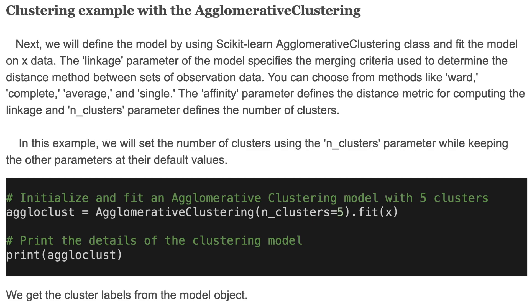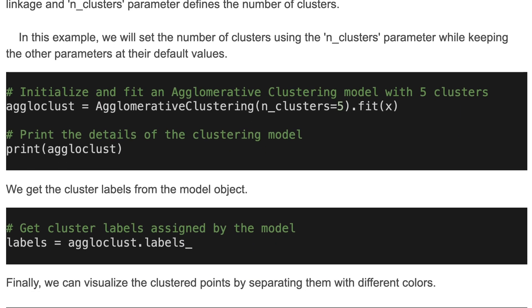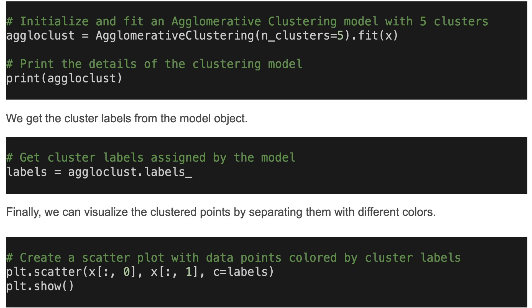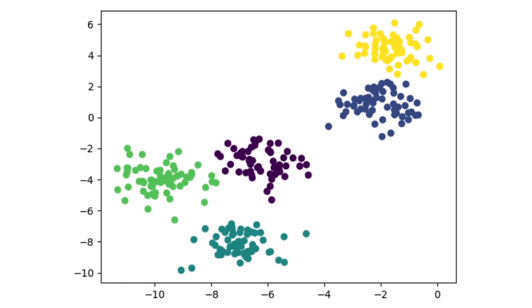We can print the details of the clustering model, then get the cluster labels from the model object. We extract the labels, and finally we visualize the clustered points by separating them with different colors. The result shows the data clustered into five clusters, highlighted with different colors.